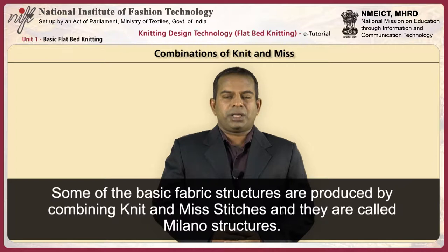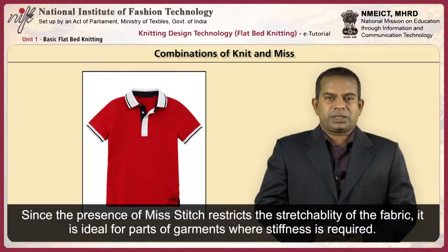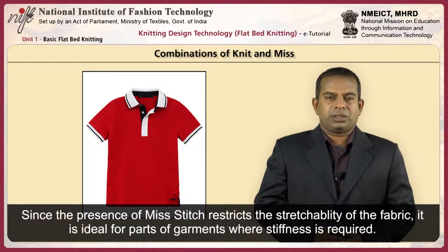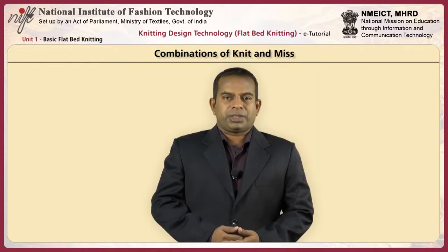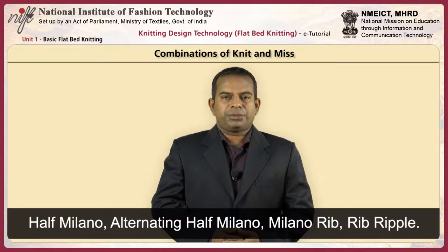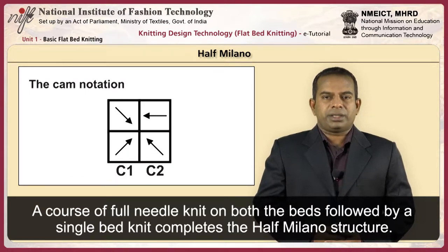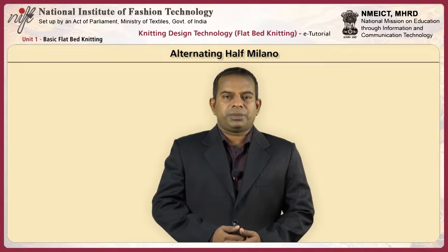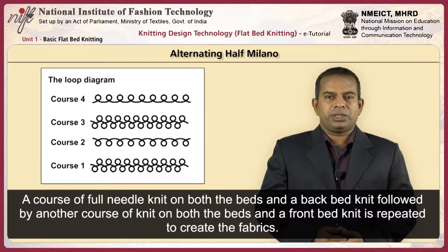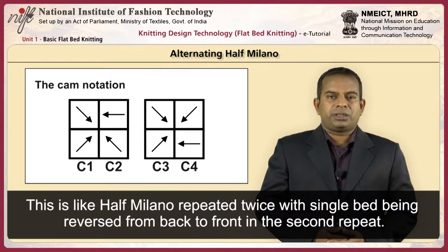Some basic fabric structures are produced by combining knit and miss stitches — these are called milano structures. Since the presence of miss stitch restricts the stretchability of the fabric, it is ideal for parts of garments where stiffness is required, for example the collar of a polo shirt. There are four types of milano structures: half milano, alternating half milano, milano rib, and rib ripple. To produce half milano, start with a course of full needle knit on both beds followed by a single bed knit to complete the structure. To produce alternating half milano, start with a course of full needle knit on both beds and a back bed knit, followed by another course of knit on both beds and a front bed knit, repeated to complete the structure.